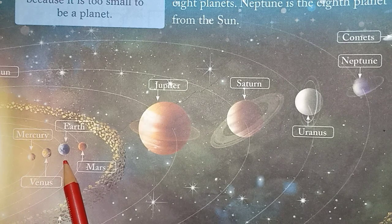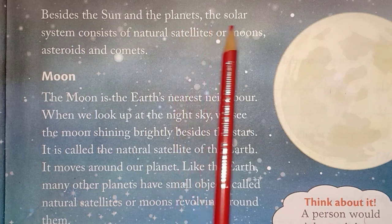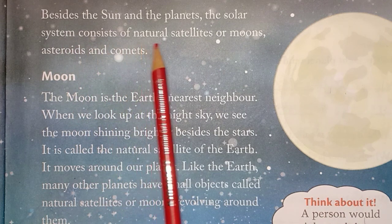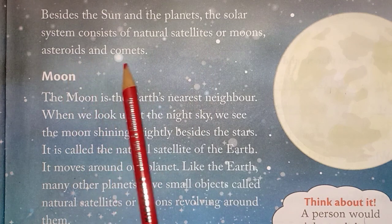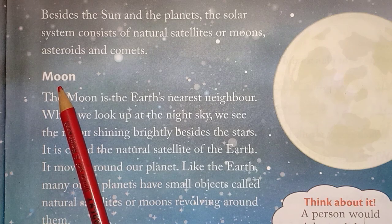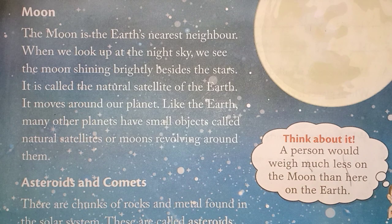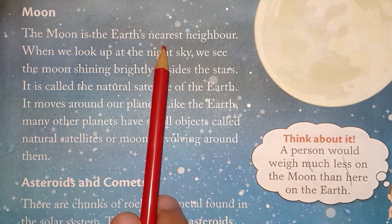Earth is in the third position from the Sun. Besides the Sun and the planets, the solar system also consists of natural satellites or moons, asteroids, and comets. All of you must have seen a white glowing ball in the night sky — that is known as the moon. The moon is the Earth's nearest neighbor.